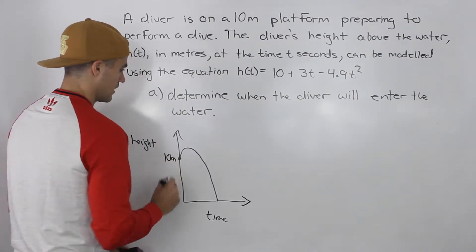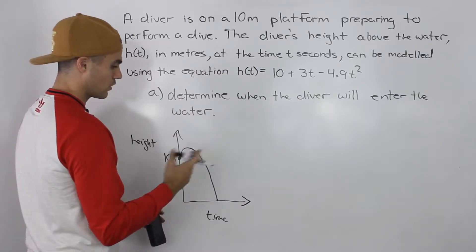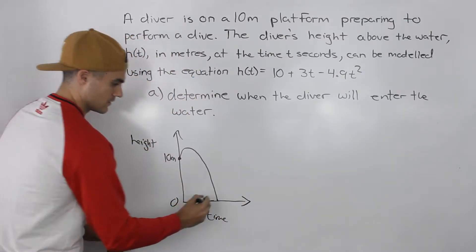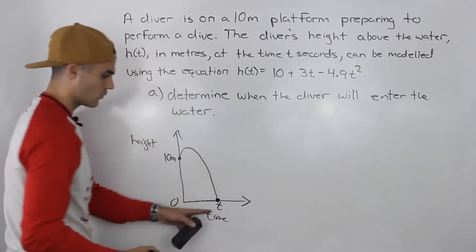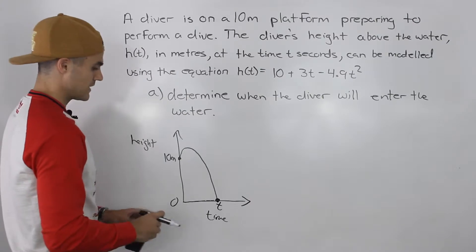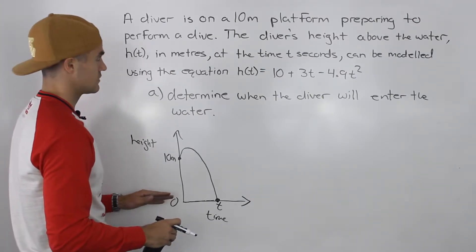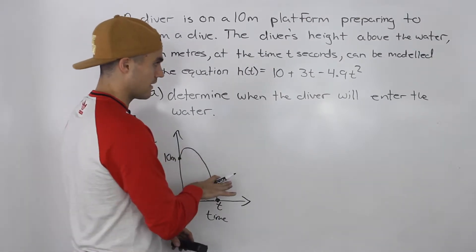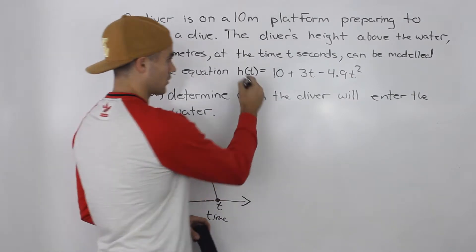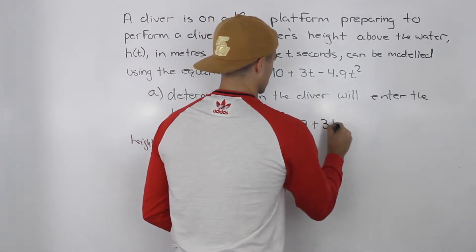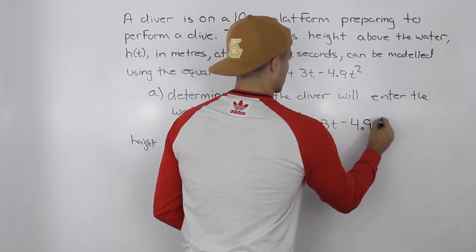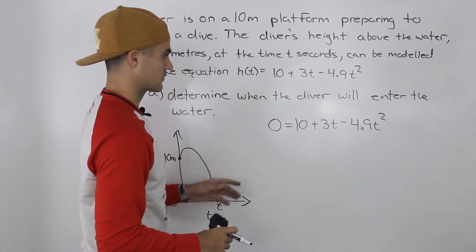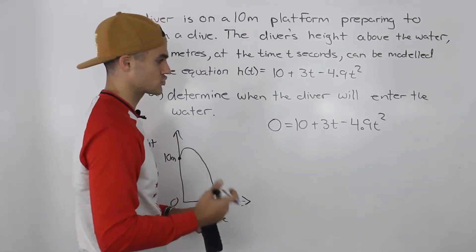For part a, we need to determine when the diver will enter the water. He enters the water when the height is zero — that's when he hits the x-axis on the graph. So we plug in zero for h and solve for t. Notice that factoring would not work in this case, so we're going to have to use the quadratic formula.